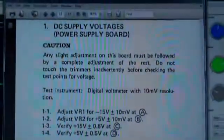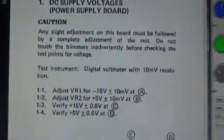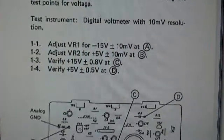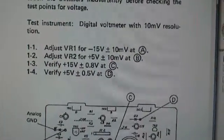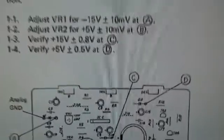All right, and here we go. Step number one, DC supply voltages. So the first thing we have to do is adjust VR1 for minus 15 volts, plus or minus 10 millivolts at point A.